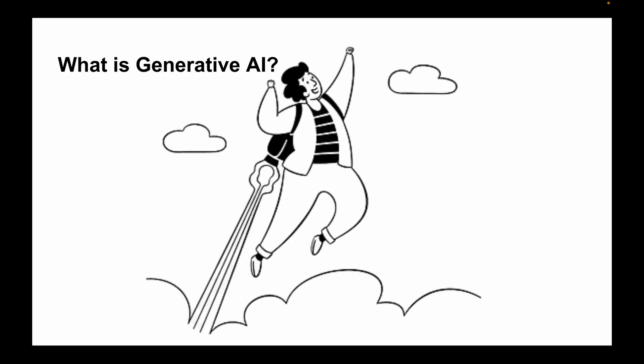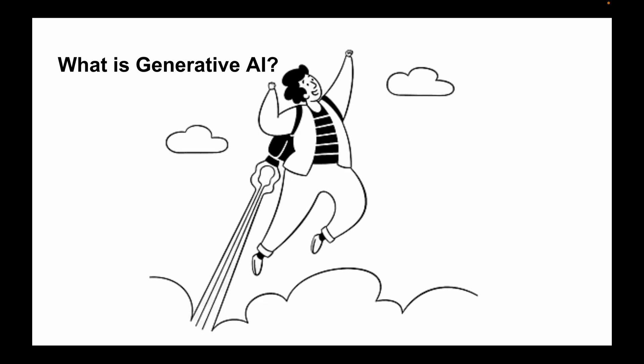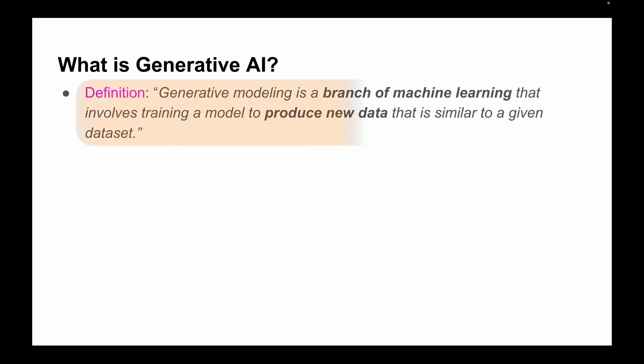To start with, let's directly jump to the definition of a generative model. Generative modeling is a branch of machine learning that involves training a model to produce new data that is similar to a given dataset.